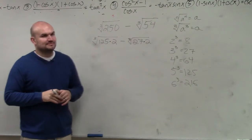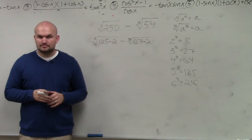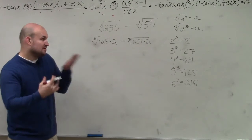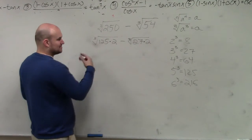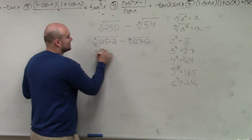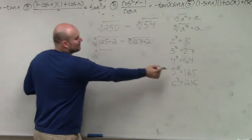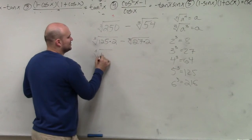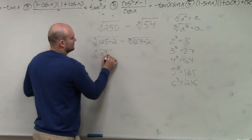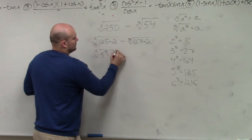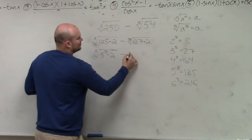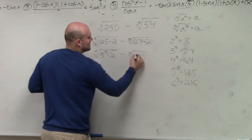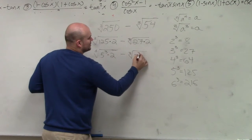Does everybody agree with me? Now, what's nice about this — I'm going to go an extra step because I know some students are still having trouble with this. 125 is the same thing as 5 cubed, minus the cube root of 27, which is the same thing as 3 cubed.